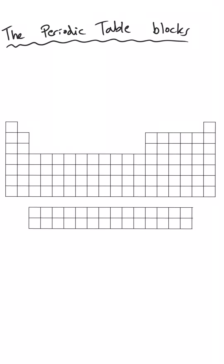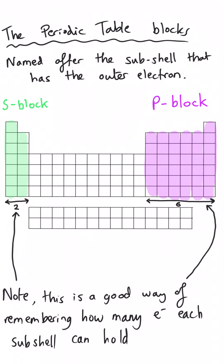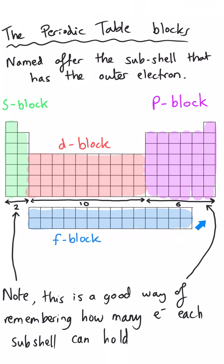This new language of sub-shells enables us to describe different areas of the periodic table. On the left-hand side, groups 1 and 2 have their outer electrons in an s sub-shell, so we refer to these two groups collectively as the s block. The right-hand side, where the outer electron is in a p sub-shell, is referred to as the p block. In the middle we've got the d block, where you'll recognise the transition metals. And then there's also the f block — the part sometimes left off the periodic table — which you don't need to know very much about at A-level.